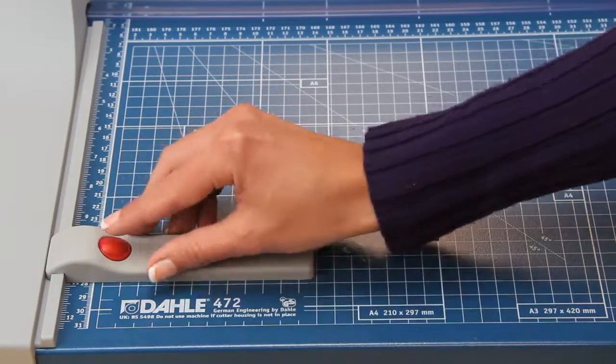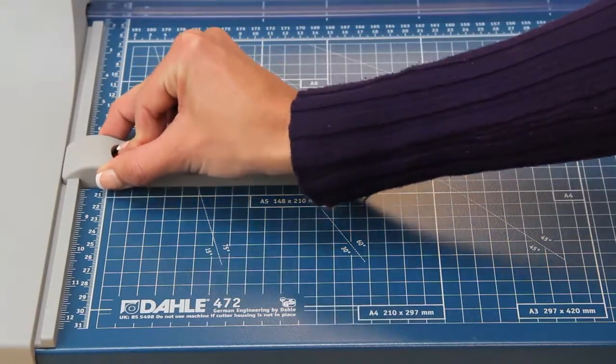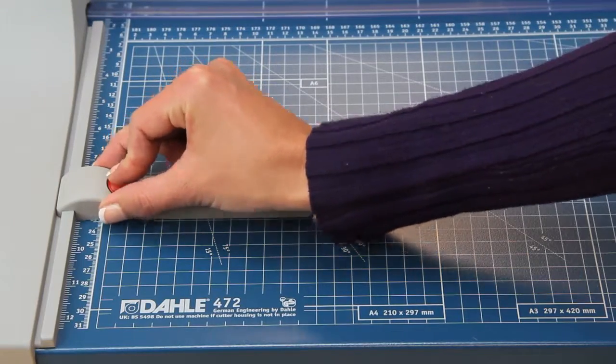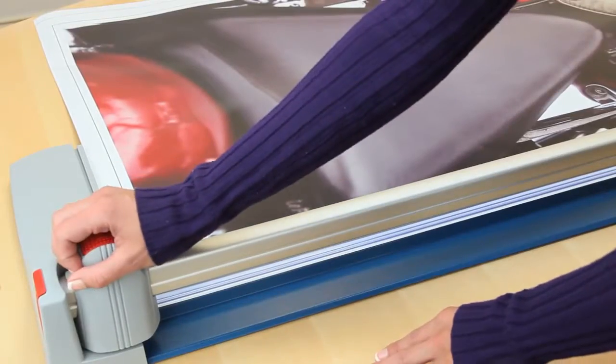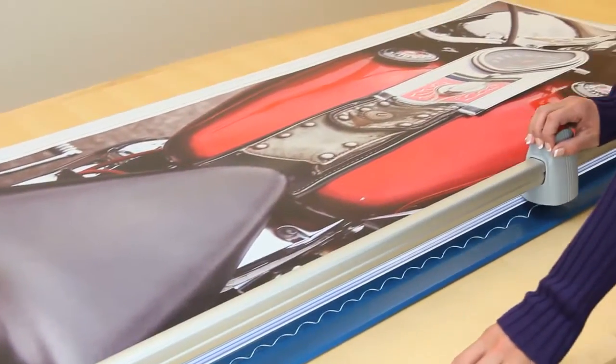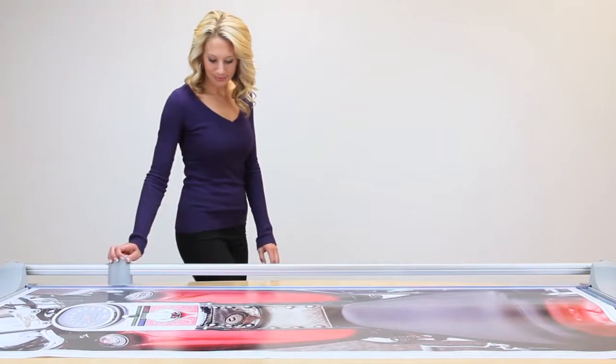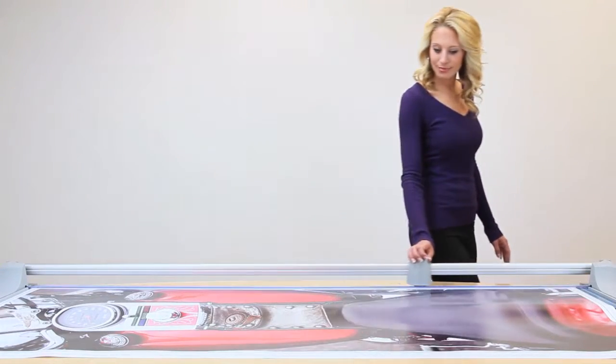The adjustable backstop is the easiest way to ensure consistent accuracy during repetitive cutting. With 72 inches of cutting length, Dahle's 472 Premium Rolling Trimmer provides the perfect solution for all your large format trimming needs.